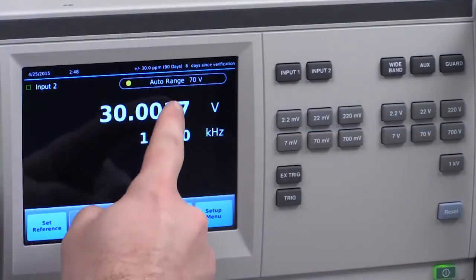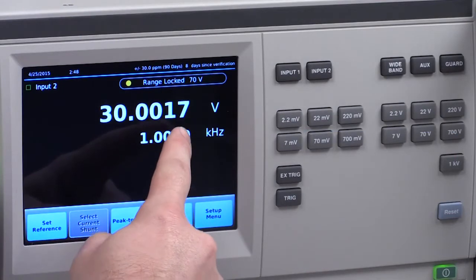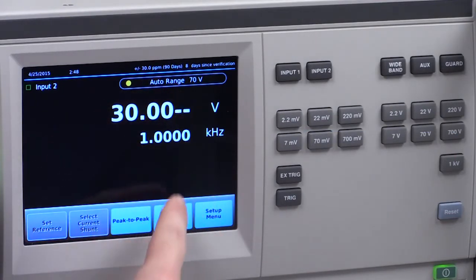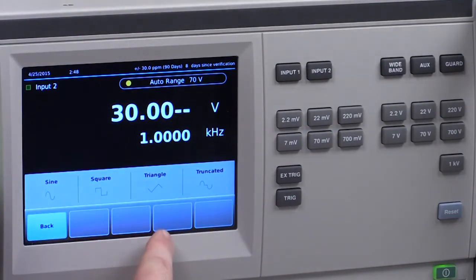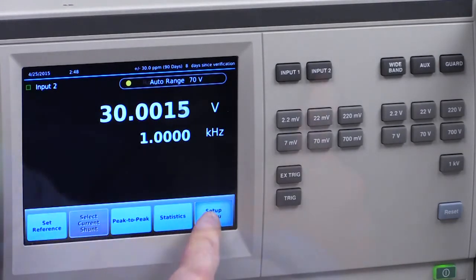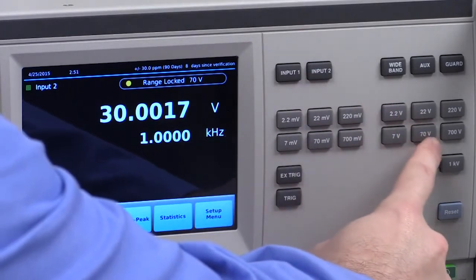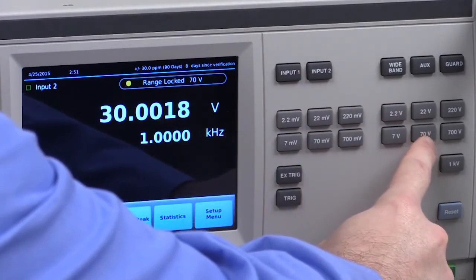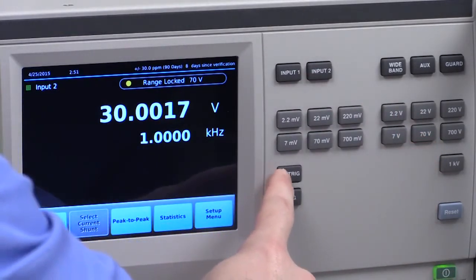The first major improvement brings the 5790B into the 21st century by adding a 5.5 inch capacitive touchscreen display and a graphical easy-to-navigate user interface. To complement the new touchscreen display, the front panel provides direct access to the most commonly used keys to change range and input.